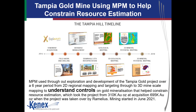Moving from the regional scale to the prospect and mine scale, this is an example from the Tampia gold mine where MPM was used to help constrain not only general exploration around the project area, but also resource estimation once we got to the feasibility study phase. Mineral potential modelling was used throughout the exploration and development of the Tampia gold project over a six-year period, basically from regional 2D mapping all the way through to 3D mine-scale mapping, to understand the controls on mineralisation. This allowed us to constrain a resource estimate which took the project from 300,000 ounces of gold at acquisition to nearly 700,000 ounces when the project was taken over by Ramelius. Mining subsequently started in June 2021.